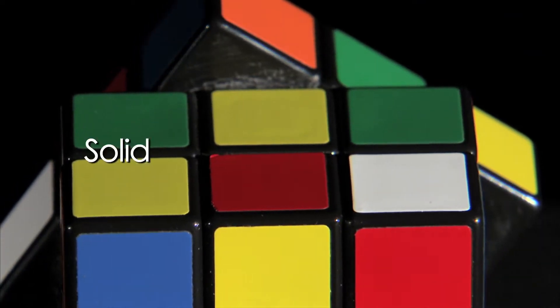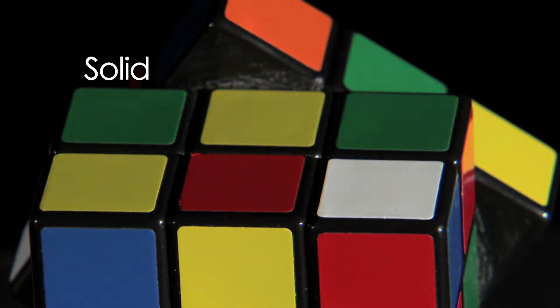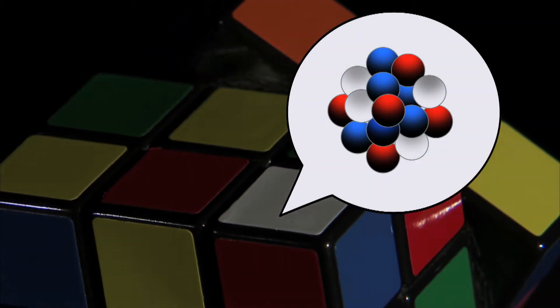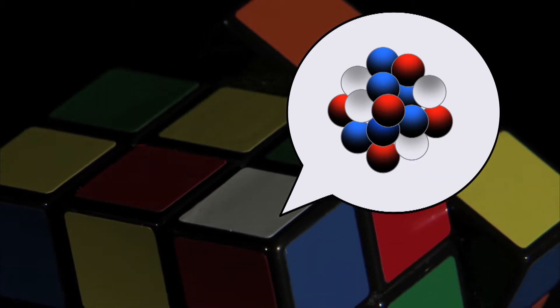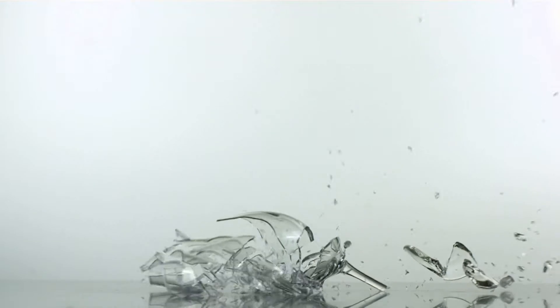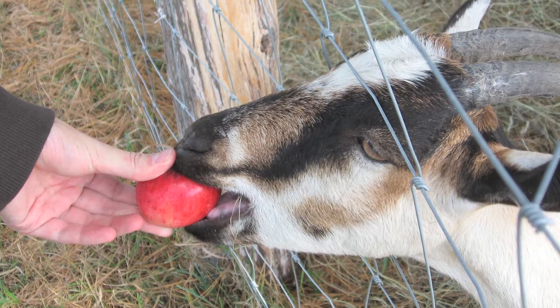The first state of matter is called solid. A solid occurs when molecules of an object or substance are very close together and cannot move. A solid can only change shape when pressure is exerted on it. An example of this would be breaking a glass or eating an apple.